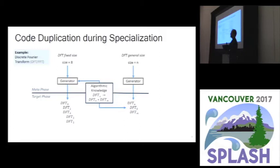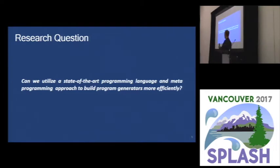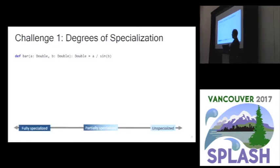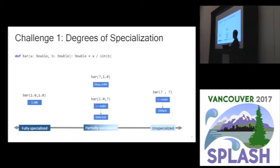This is a problem because we apply the same knowledge twice, but the meta phase and the target phase might be two completely separate languages. In our case, the meta phase is Scala and the target phase could be anything like C++. What usually happens is that you start to duplicate logic across these two stages. The underlying research question that led up to this paper was: can we utilize state-of-the-art programming techniques and programming languages to build code generation more efficiently?